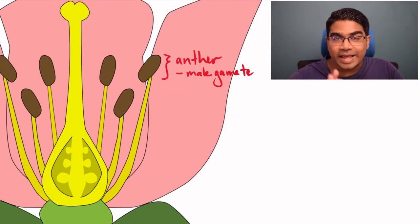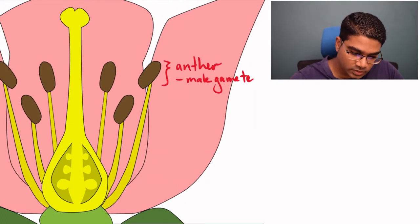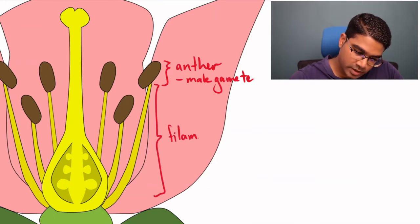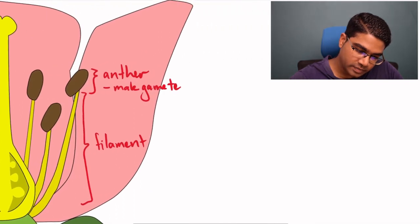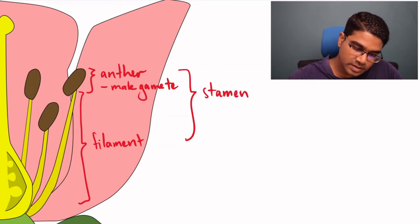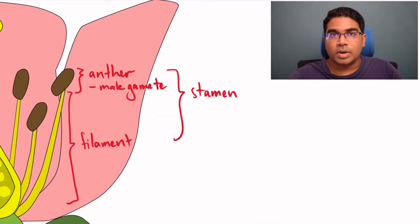And then holding the anther up, this stalk-like structure here is known as the filament. And together, the anther and the filament are collectively known as the stamen. So the stamen is the male reproductive part of a flower.